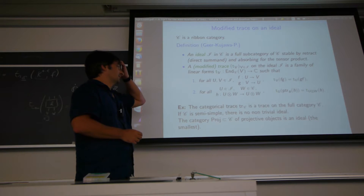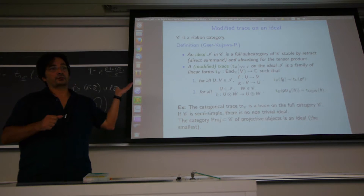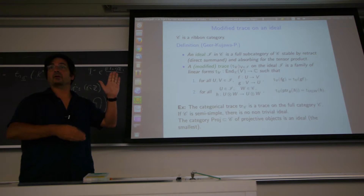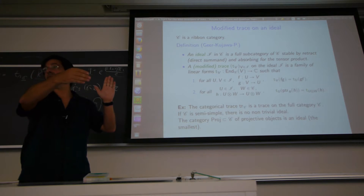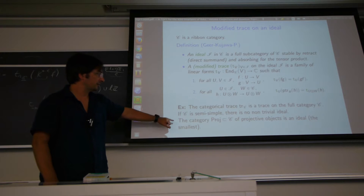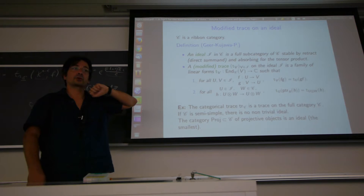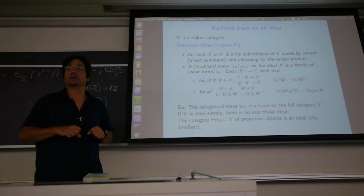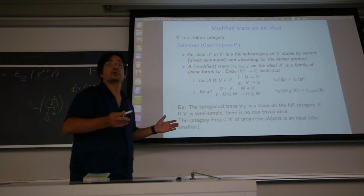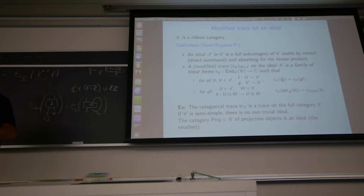For examples: in a ribbon category you can have a decreasing sequence of ideals. For SL2, you only have two steps: the full category, the ideal of projectives, and the zero ideal. In general, the smallest ideal is the subcategory of projectives — summands of projectives are projective, and tensoring a projective by any object gives a projective. If the category is semi-simple, there is no non-trivial ideal, so semi-simple categories are the degenerate case for this theory.